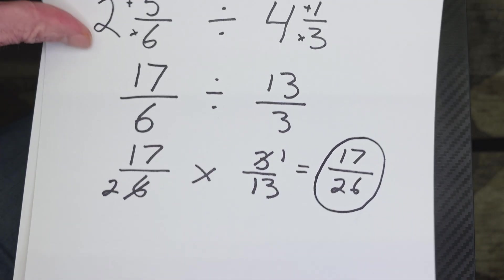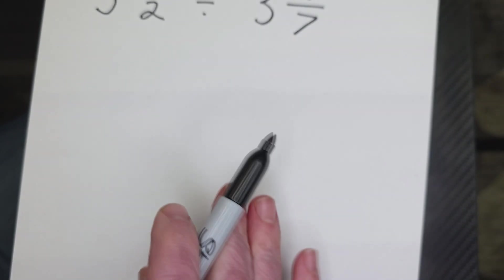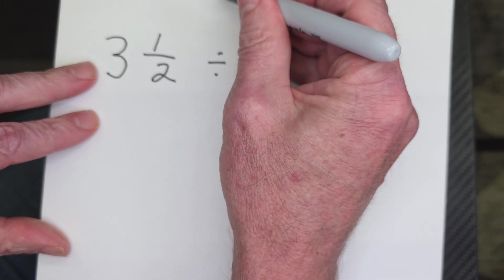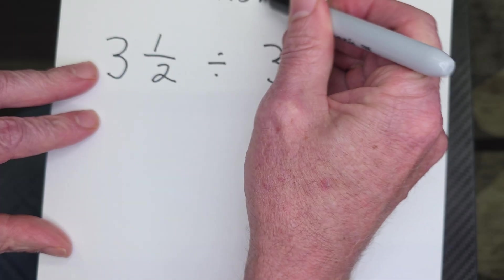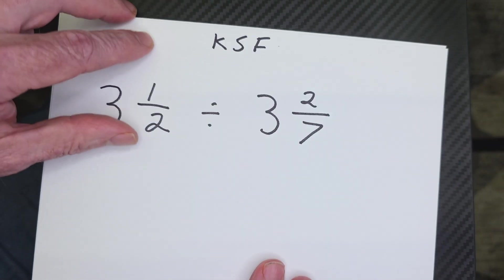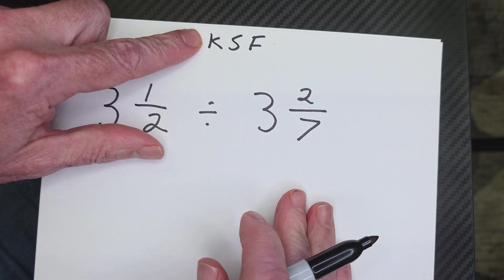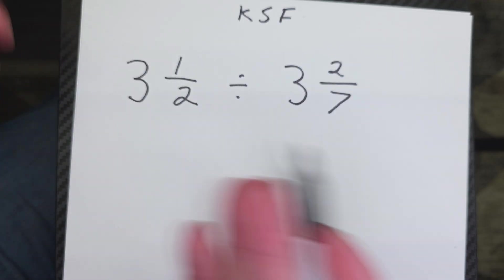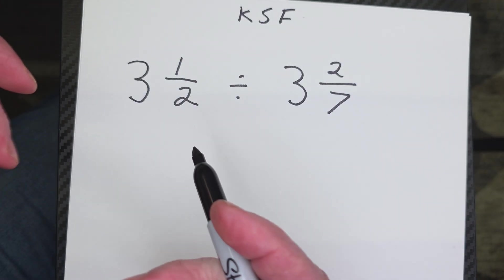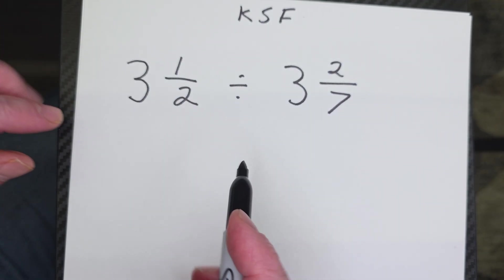Hey, ready to get started on another one? Yeah, let's do it. All right, again, I'm going to write those initials up here. KSF. Remember what they stand for? Oh, you can't see it. Remember what they stand for? That means keep, switch, and flip. All right, let's just start by what do we need to do here? What do we need to do? That's right, we need to turn them into improper fractions.